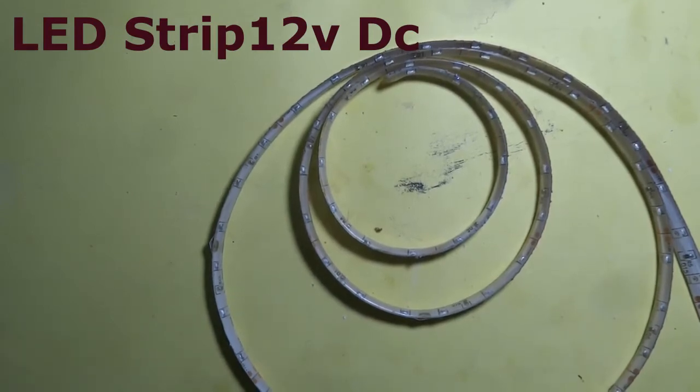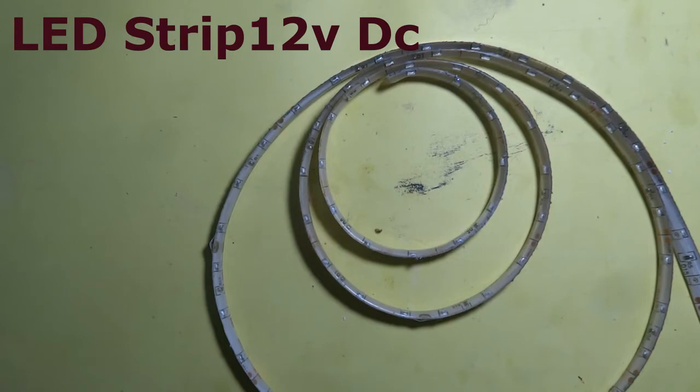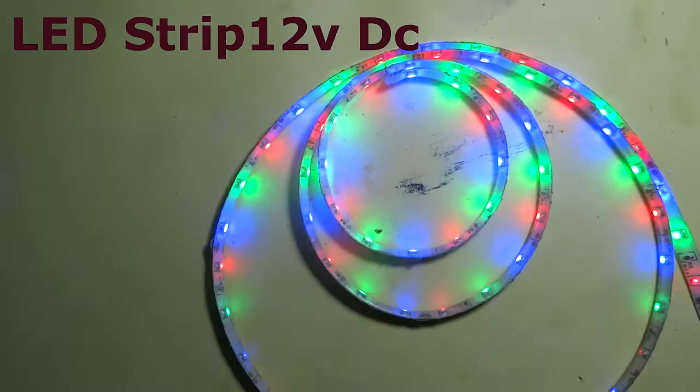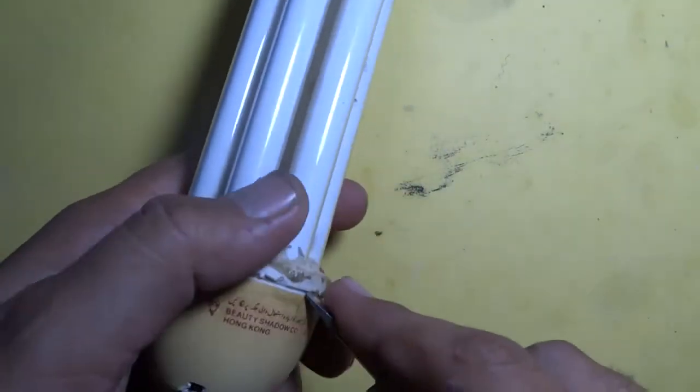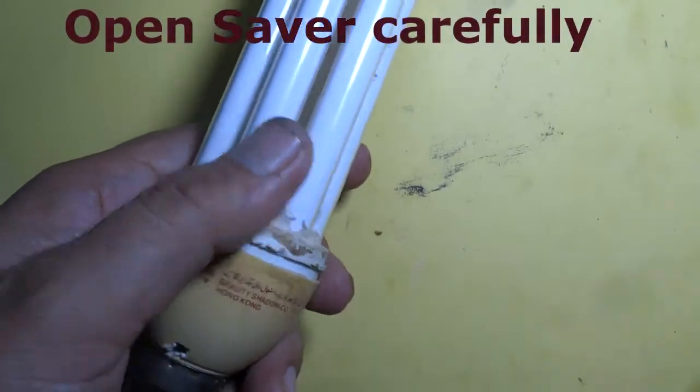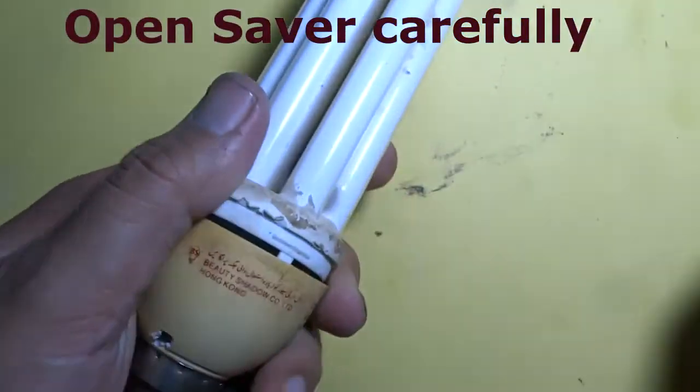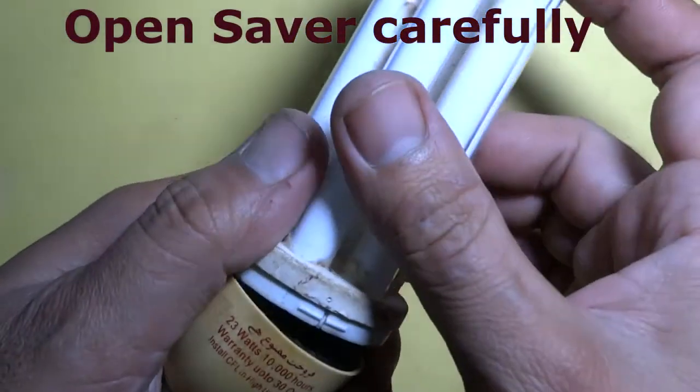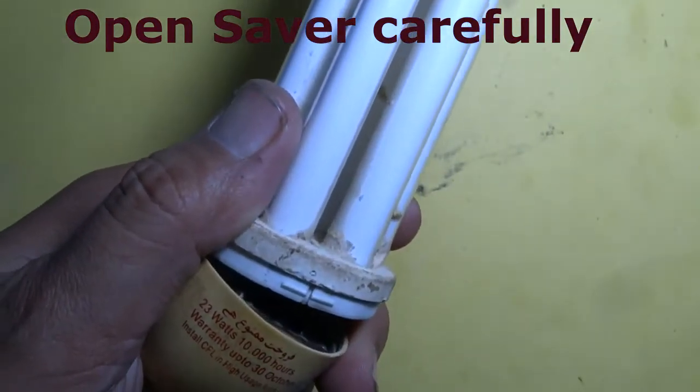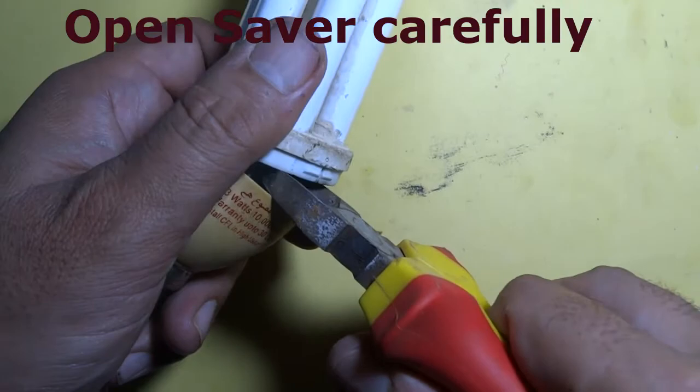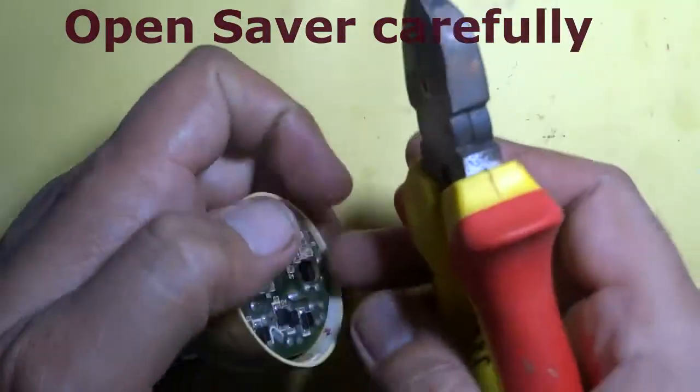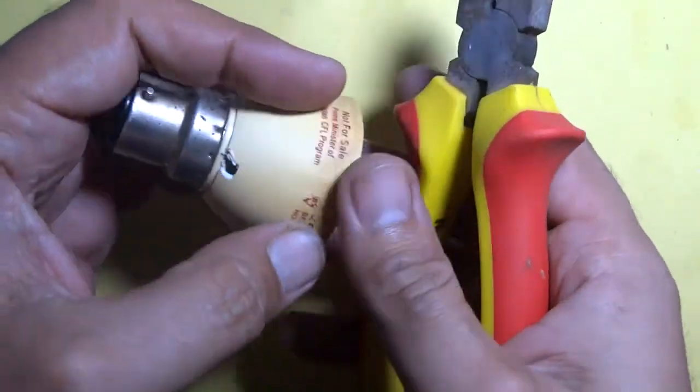This is the LED strip. Look at the LED strip, it is colorful. First of all, we open our old energy saver, cut down all its points, and also cut down its circuit.